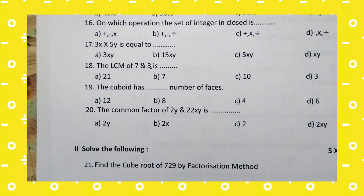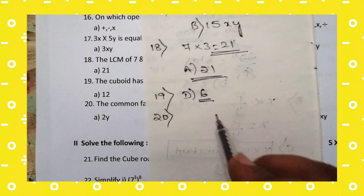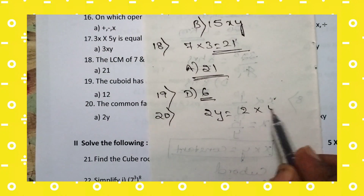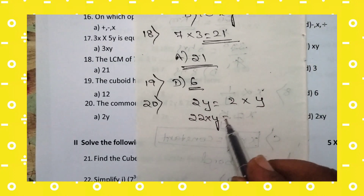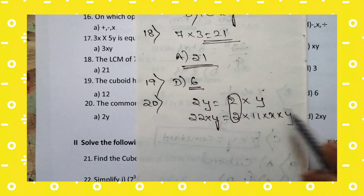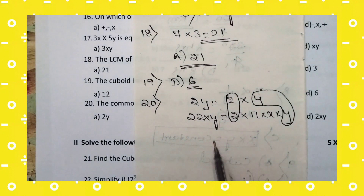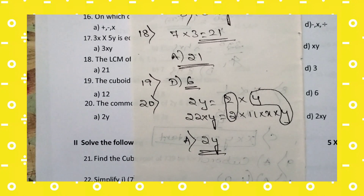20th question — the last MCQ of paper 3: the common factor of 2y and 22xy. 2y can be written as 2 × y. 22xy can be written as 2 × 11 × x × y. In both expressions, 2 is common and y is common. Therefore the common factor is 2y. Option A — 2y — is the right answer for the 20th question. This completes the 20 MCQ questions of practice paper number 3.